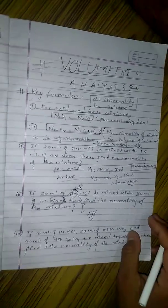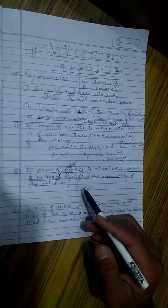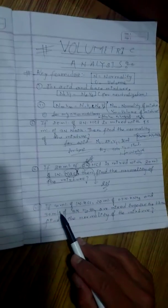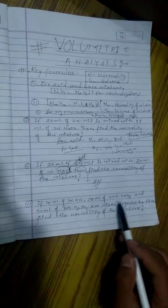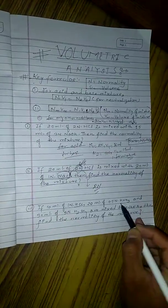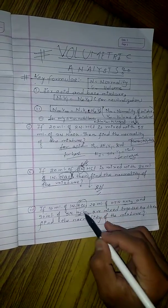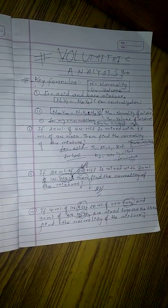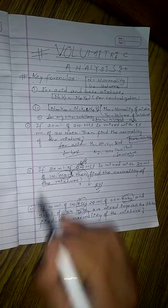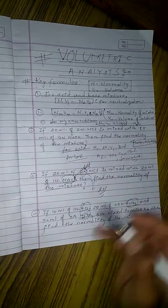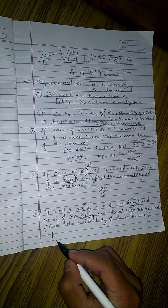And look at the last question. If 10 ml of 1N HCl, 20 ml of 0.5N HNO3, and 30 ml of 3N H2SO4—these all are acids, you can see here. So you can use the formula. Find the normality of mixture.